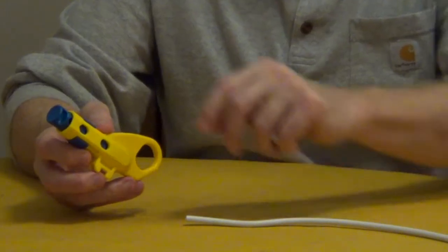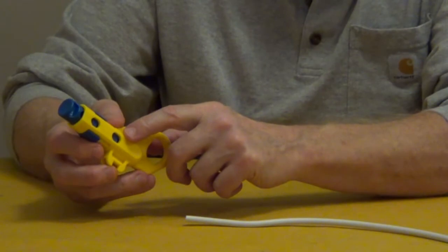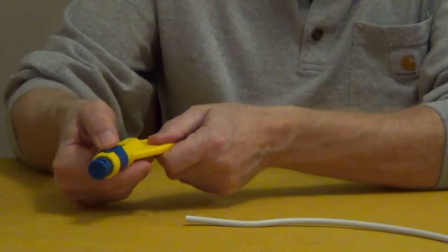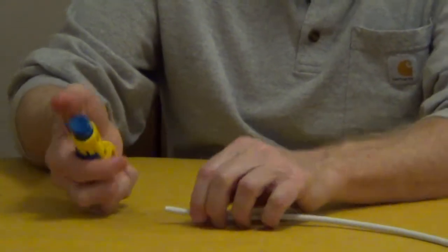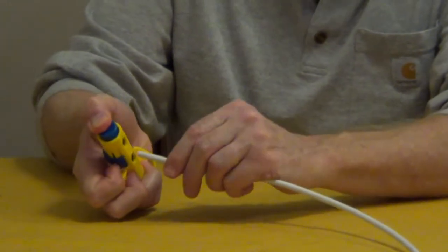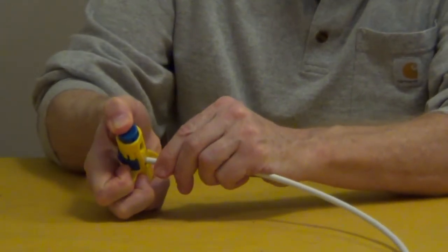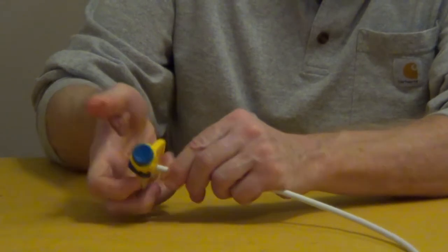For stripping coaxial cable, you're going to be using the cutting bay marked coax. Slide your depth gauge down behind that opening and push down your cutters. You want to make sure you push the cable so it goes all the way across, it's not at an angle.